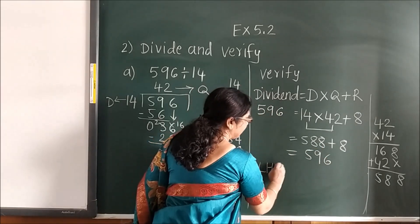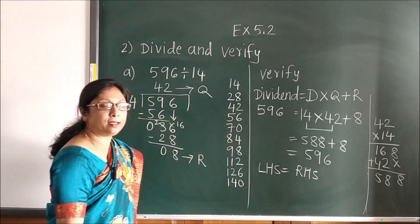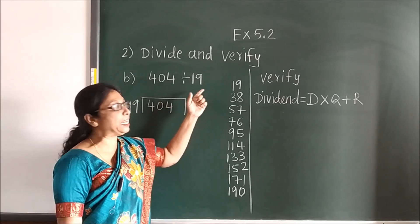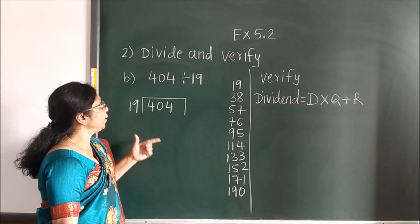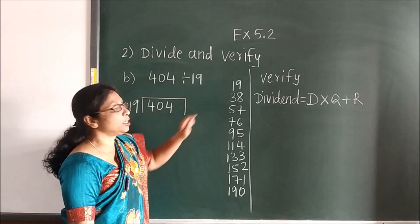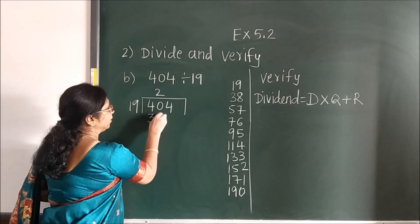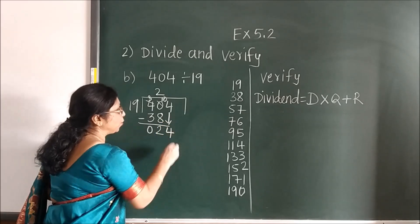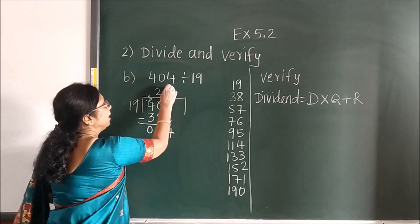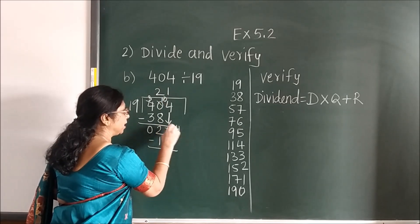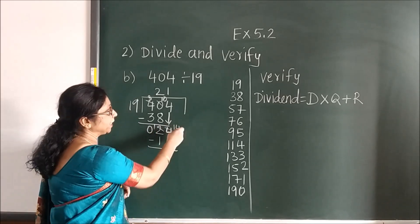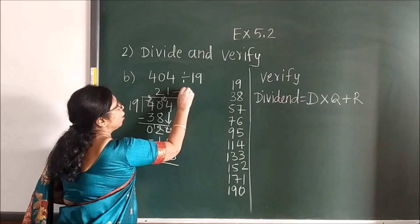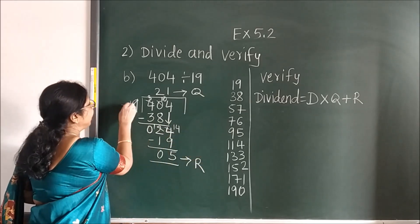Now here B: divide 404 by 19. I have written the table of 19. Less than 40 is 38, so 19 twos are 38. Subtract — you get 2, bring the next number down — 24. Less than 24: 19 ones are 19. Subtract — you get remainder 5. Your quotient is 21, remainder is 5, and divisor is 19.